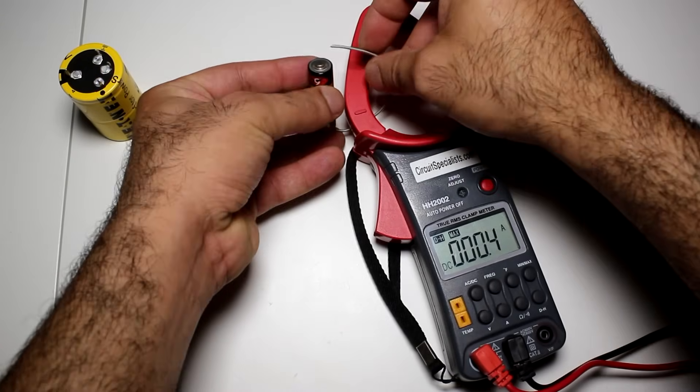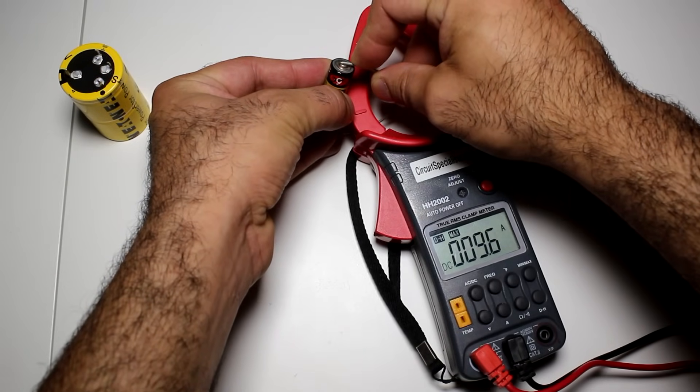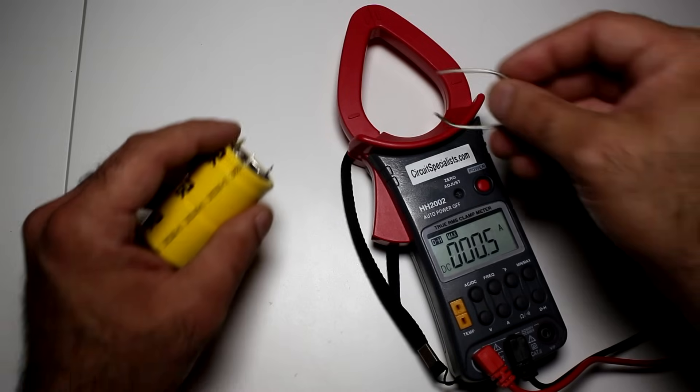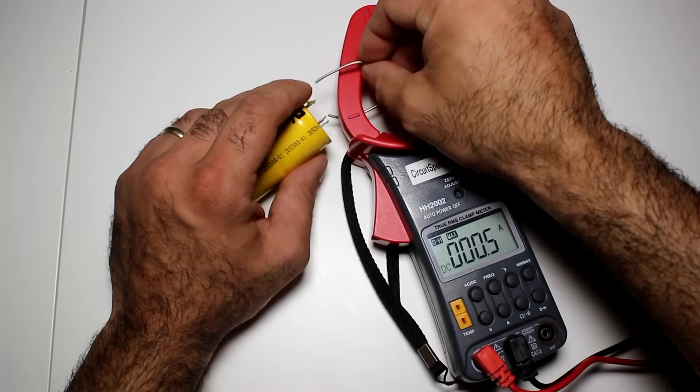let's first short the double-A battery and see how much current it can deliver. 9.6A. Now, let's short the supercap. Of course, the resistance of this wire is gonna limit the current through the supercap.